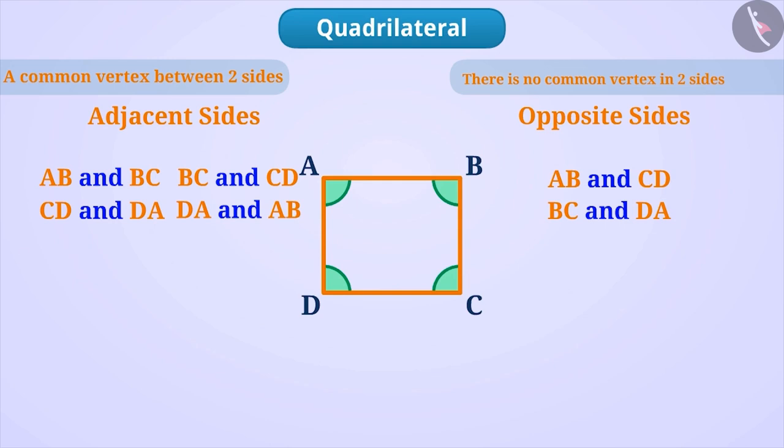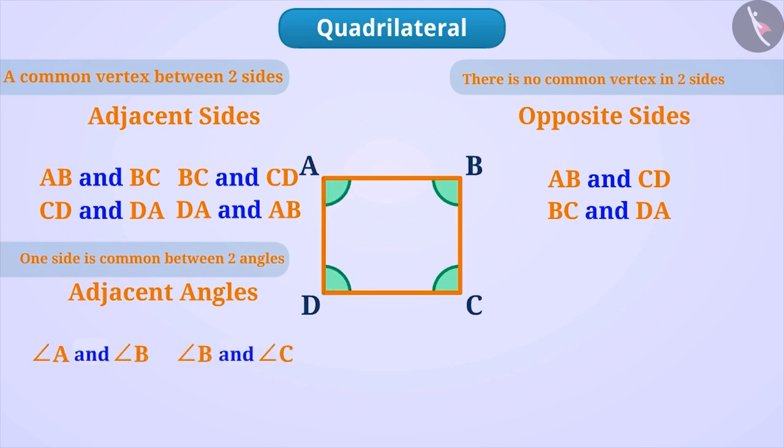Similarly, if any of the two angles of a quadrilateral have a common side, then such angles are called adjacent angles such as angle A and angle B, angle B and angle C, angle C and angle D or angle D and angle A.